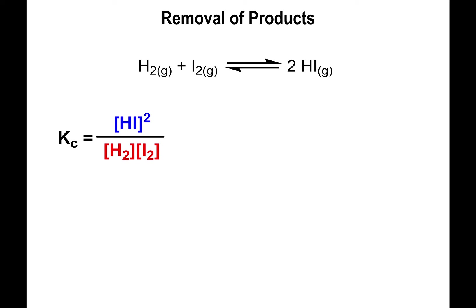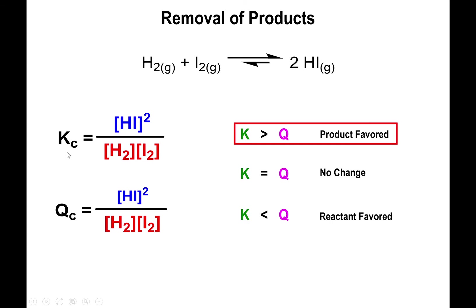The same applies if you remove products. If you remove products, the numerator becomes smaller compared to the equilibrium expression, so the value of Q is going to be smaller than K. Because of that, the reaction shifts to the product side. Notice: whenever you remove something, the equilibrium shifts toward the side where the removal took place — shift to the product side if you remove products, or to the reactant side if you remove reactants.